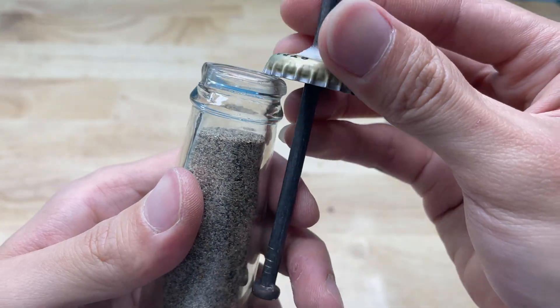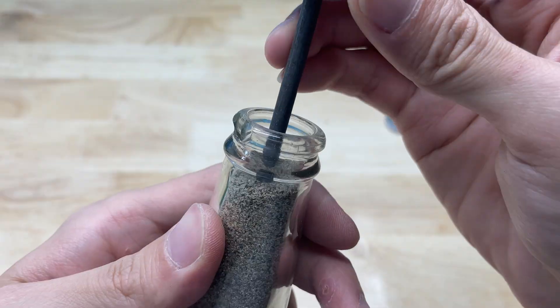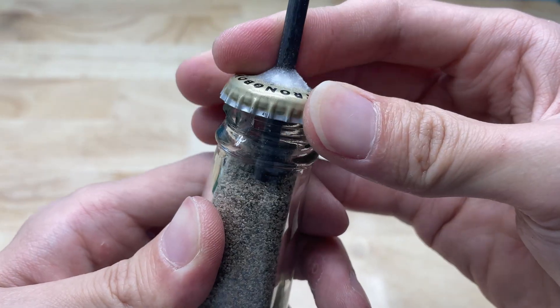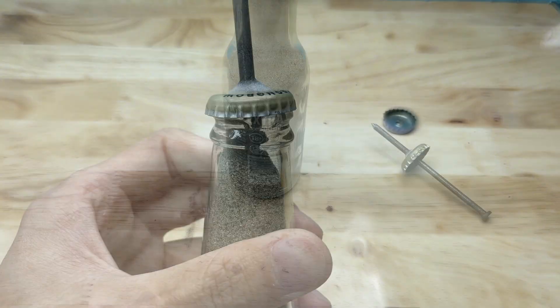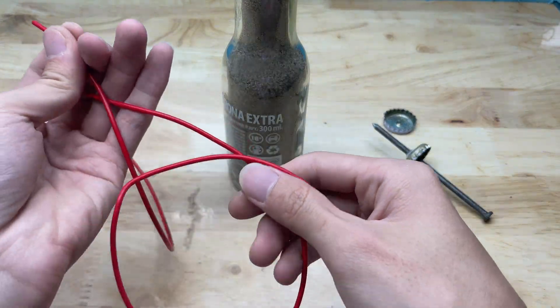When the bottle cap is screwed back onto the bottle, the sand packed inside begins to show its effect clearly. The sand surrounds the nail, helping keep it straight and minimizing vibration.